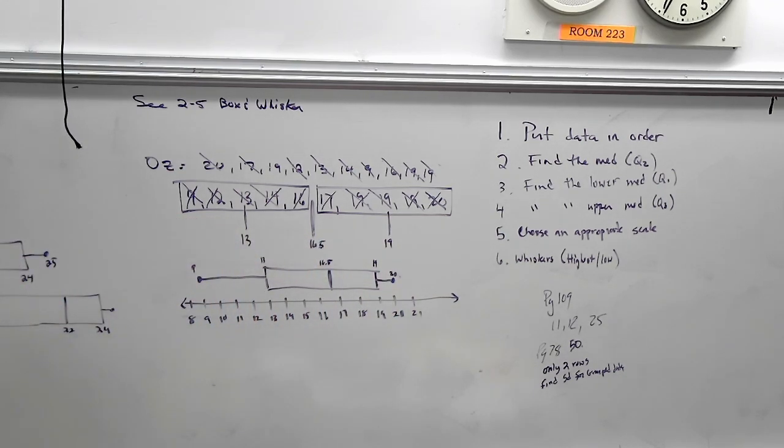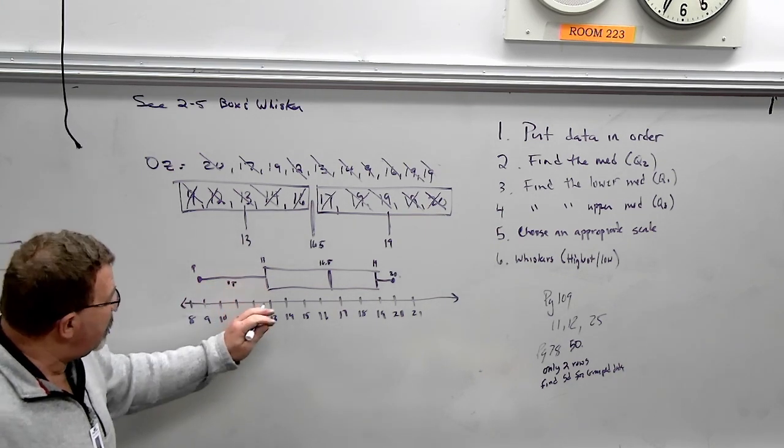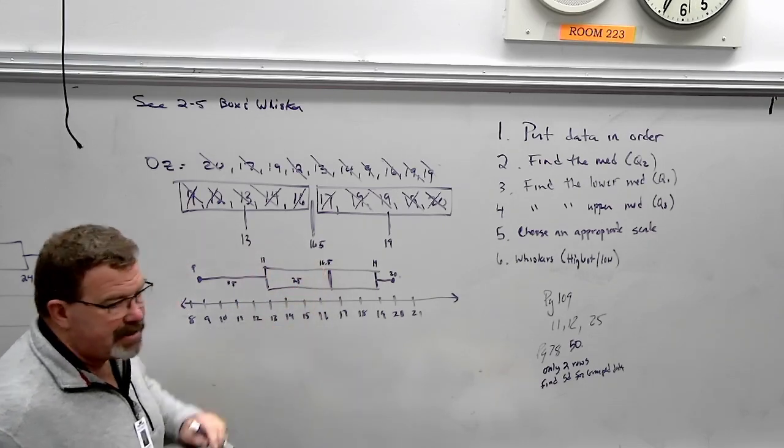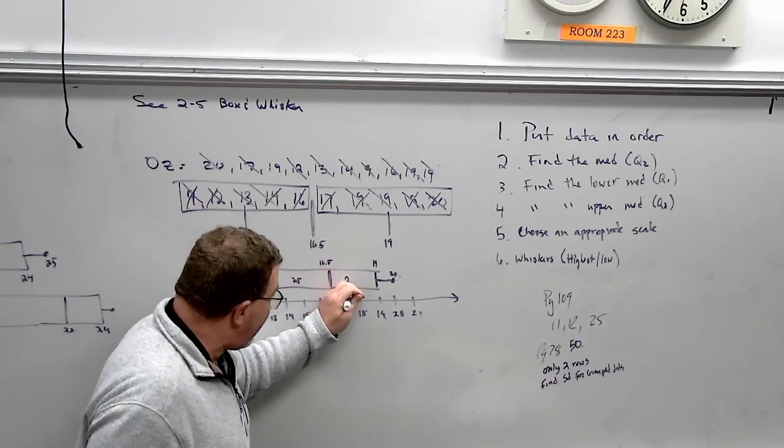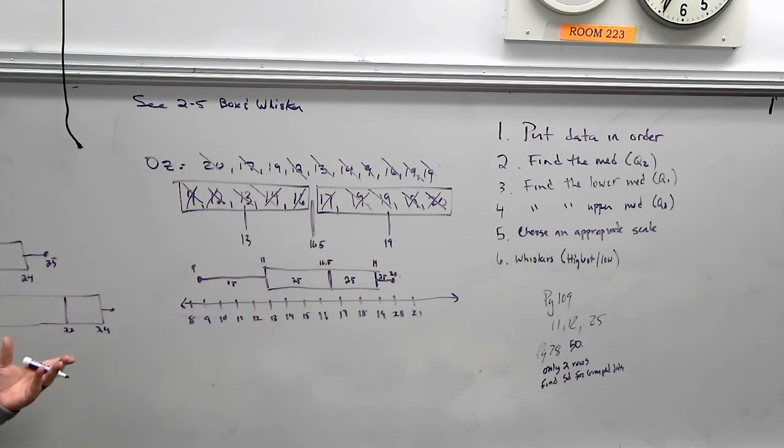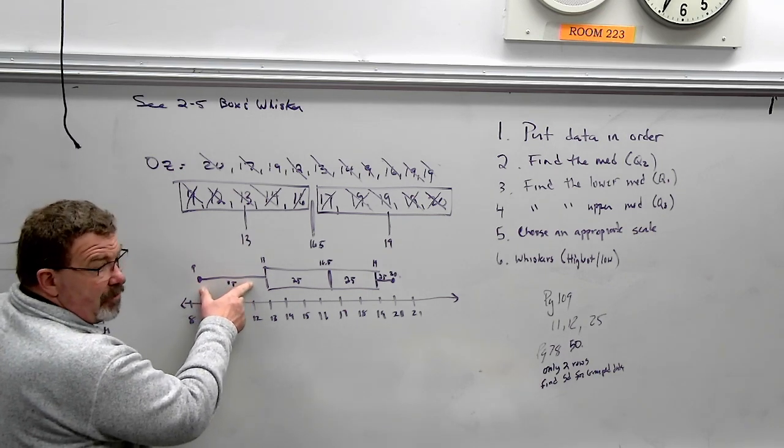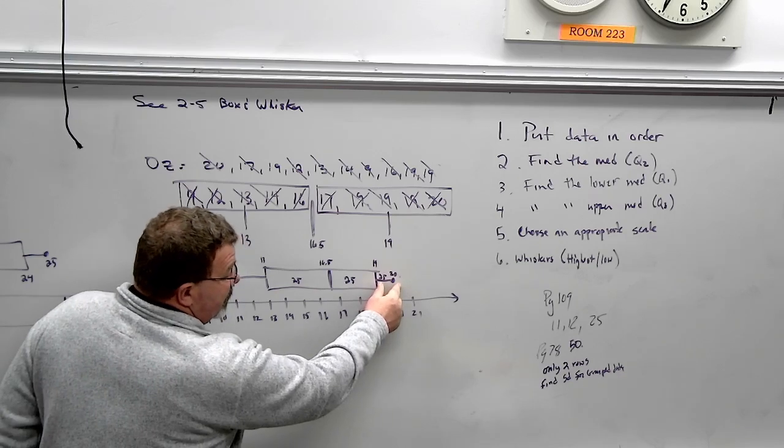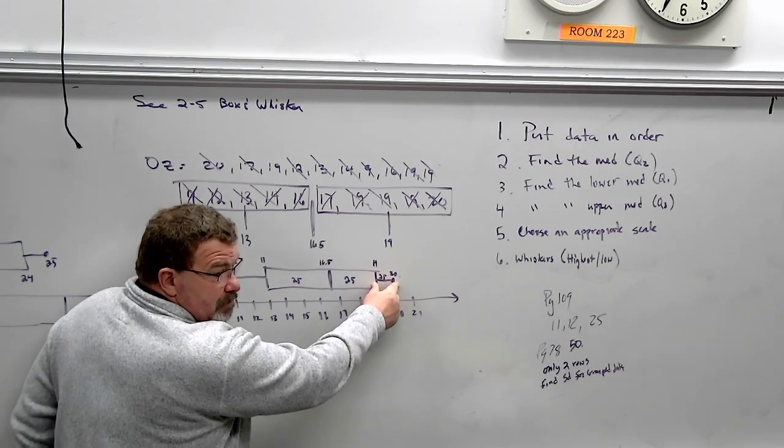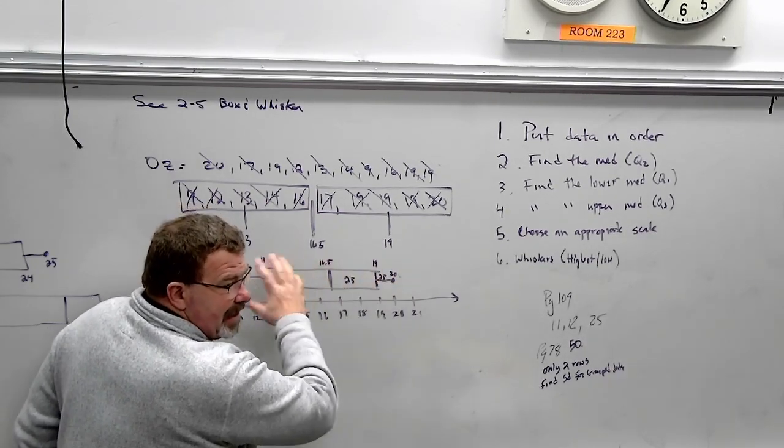So I can kind of, and here's how this works. A box and whisker plot breaks everything up into 25%. 25% of the people got between a nine and a 13. 25% of the people got between a 13 and a 16.5. 25% of the people, 25% of the people. So here's kind of what I look at. This 25% were pretty low scores and they're spread out. This 25% were pretty darn all on the same page, right? They're only one point different. And so I can visually see how things work.